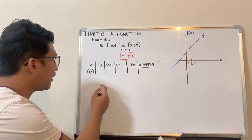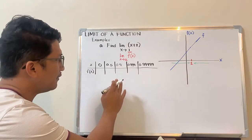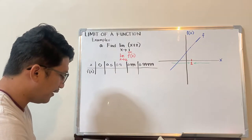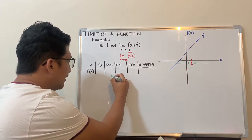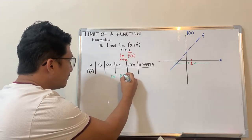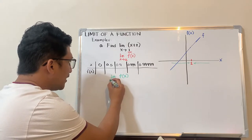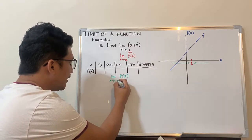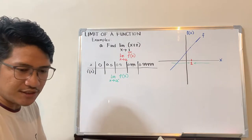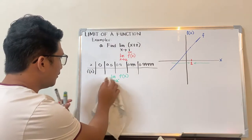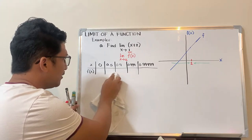Next, we could consider 0.5, then 0.9, then 0.999, then 0.9999. You design the values yourself, but make sure the values are approaching 1. Then you substitute each value into the function.